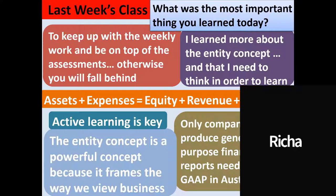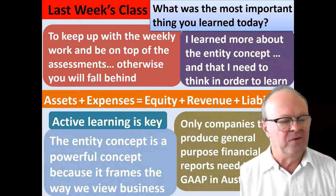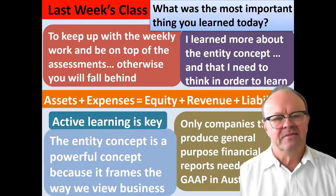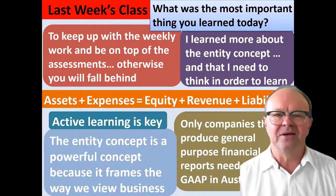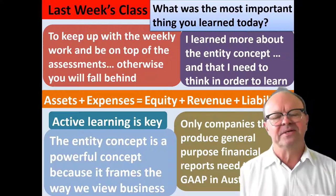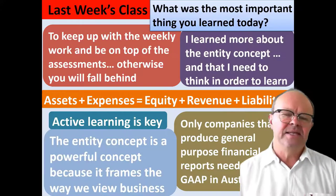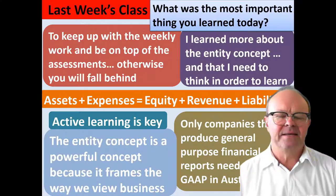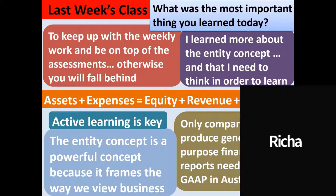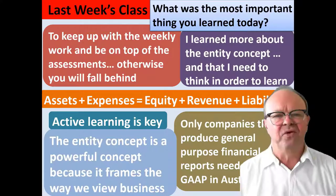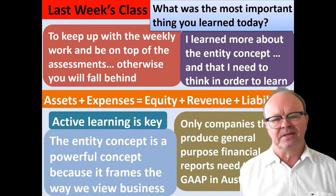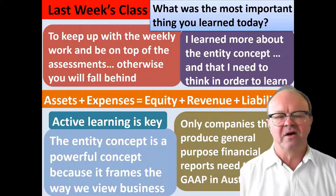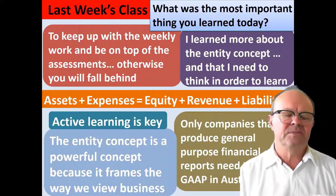Assets plus expenses equals equity plus revenue plus liabilities. This is something you need to remember — you can write it out 40 times and you'll remember it. This is the business model on which accounting is based, the view of business that accounting has. Just five elements — it's a simplification of what business is.